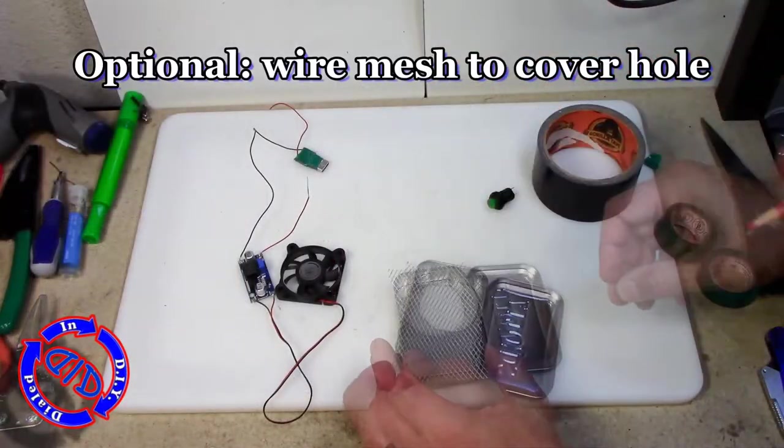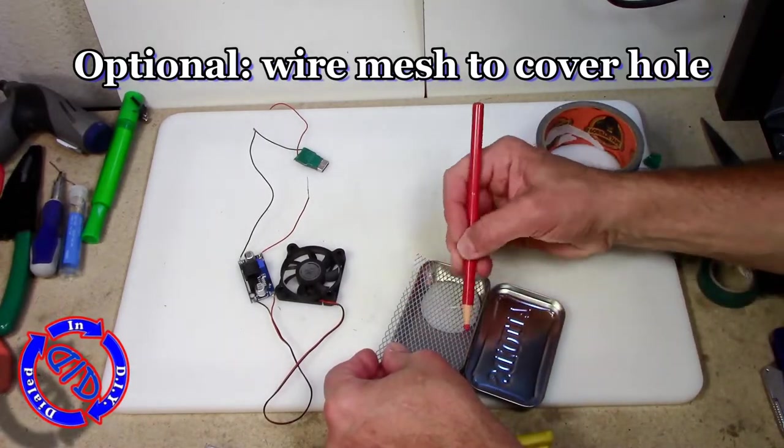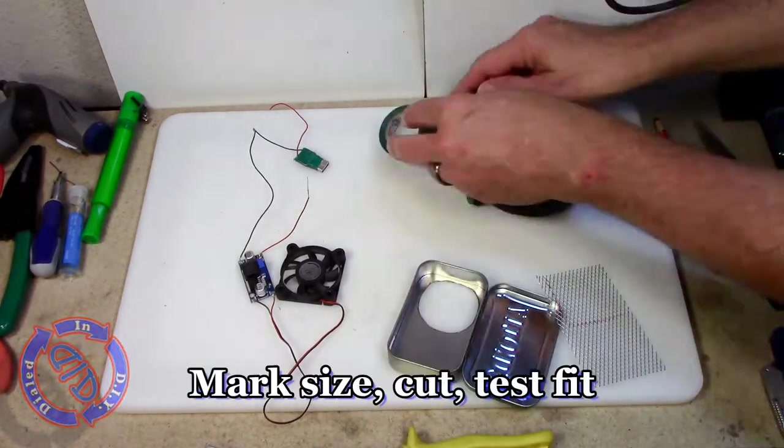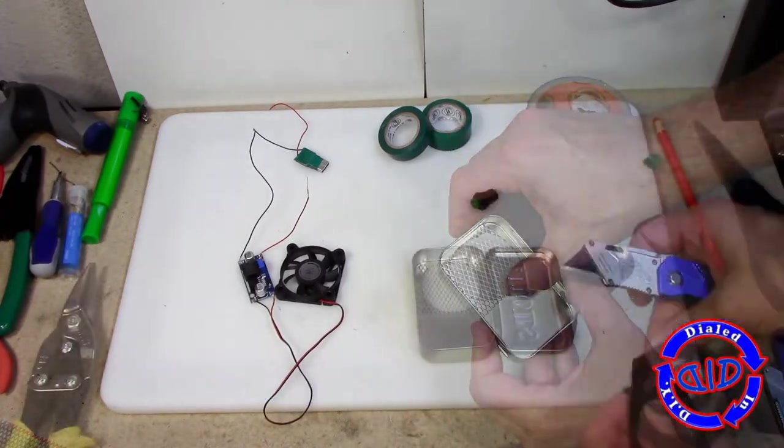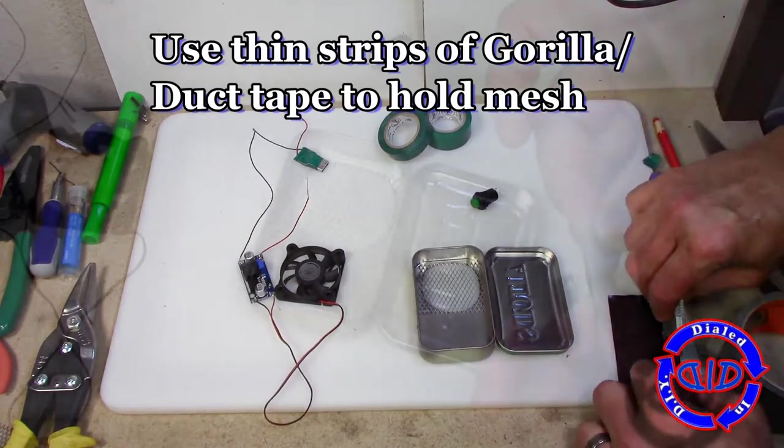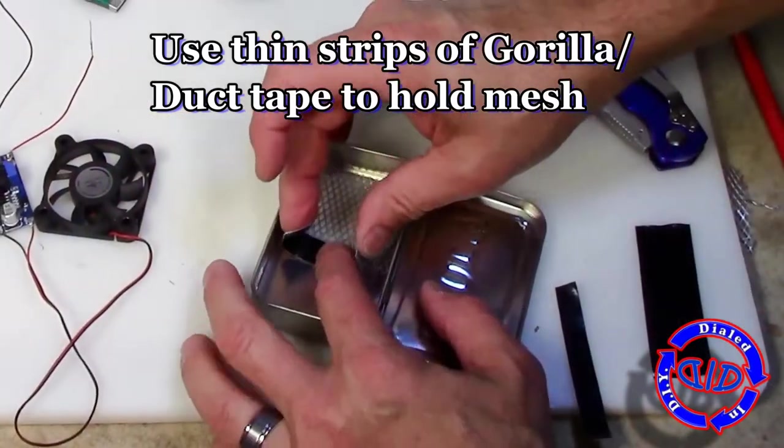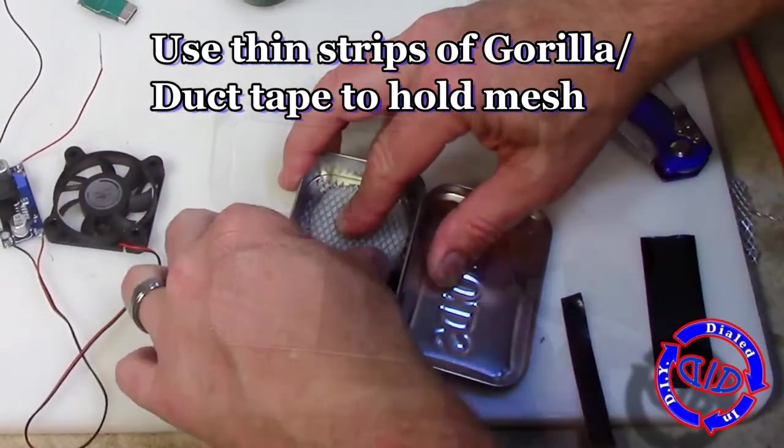As an optional step in this build, I've got an old piece of wire mesh that I'm going to use once I've cut it down to size to cover the inside of the hole that the fan is going to blow through. This will help to make sure that no one sticks a finger into the fan blade when it's moving and just give a little extra security to my finished project.